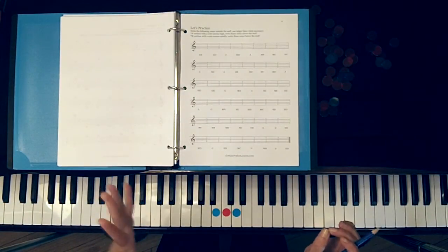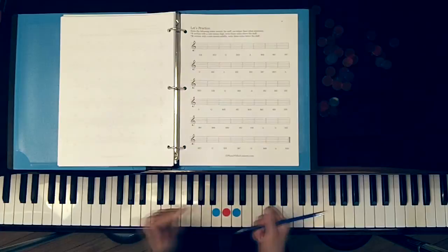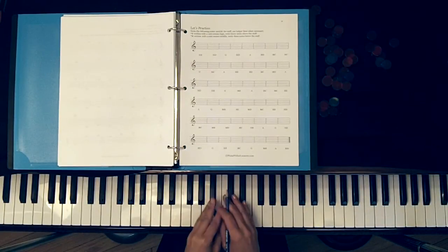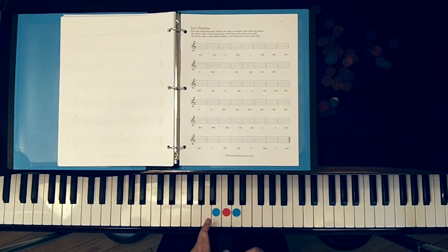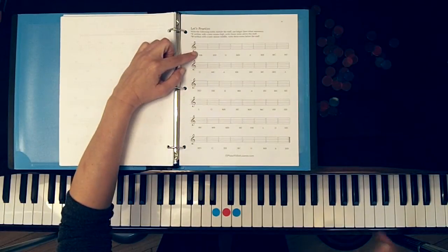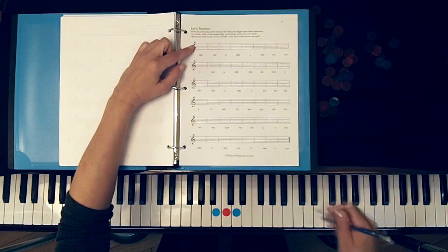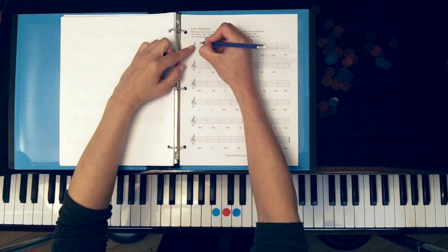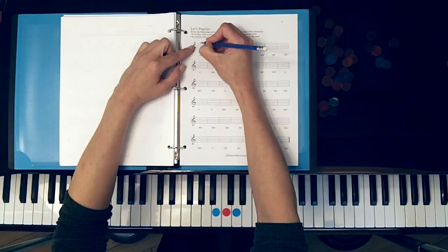Once you're done here you can check your answers using the answer key, and then the next step is going to be writing the notes. If there's an H with the letter it means high, and if there's an M with the letter it means middle. There's going to be duplicates of some of these notes.